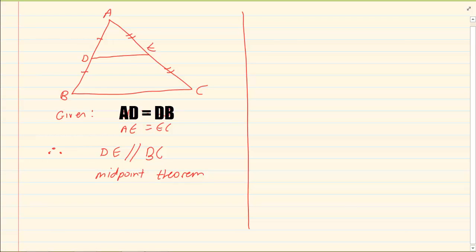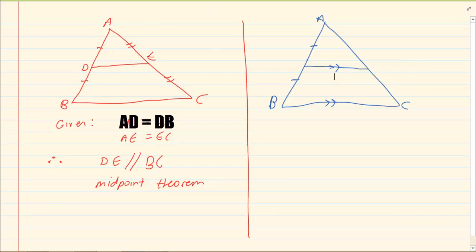Now the second theorem — it is also a triangle and we also have a line cutting through it. What they give us is that it cuts through the midpoint of one side but it is parallel to the second side. So what is given is that AE is equal to EB and that ED is parallel to BC.